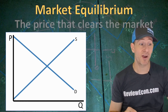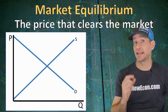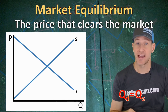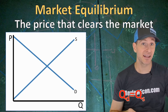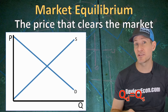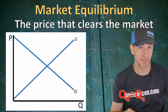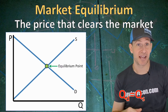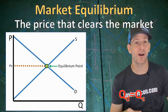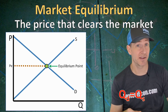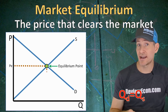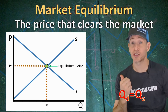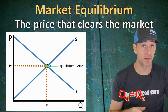Market equilibrium is the price that clears the market — it's the price where the quantity supplied equals the quantity demanded. That means the number of people willing to sell at that price equals the number of people willing to buy at that price. We find the equilibrium point where the two curves intersect. The price found on the y-axis is called the equilibrium price, the quantity below is called the equilibrium quantity, and market forces push prices towards that equilibrium price.